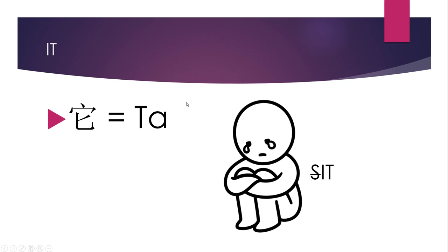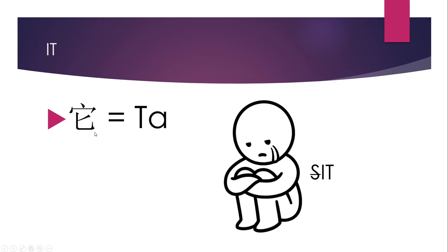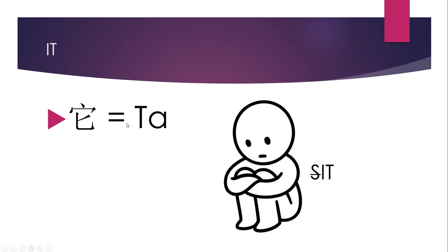The next word is 'it,' pronounced as tā. If you're getting confused remembering this, it's pretty simple — you see the dagger or sword-like structure in this character. Think of any person sitting: you'd say 'sit,' then remove the 's' and you get 'it,' which gives you tā — meaning 'it' or 'who is it.'